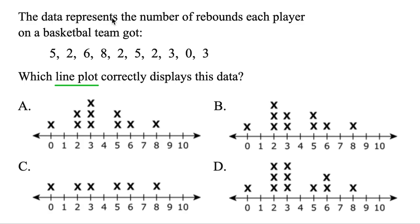Now the data represents the number of rebounds each player on a basketball team got. So one player got five rebounds, but then another player also got five rebounds, so we want to see two X's above five.